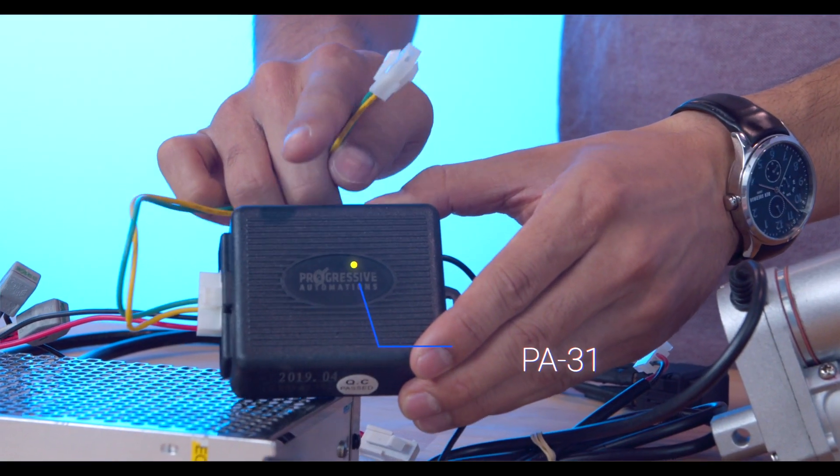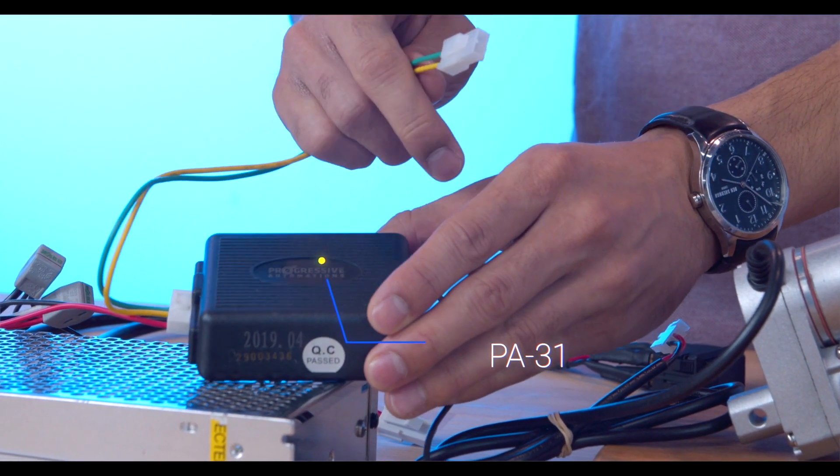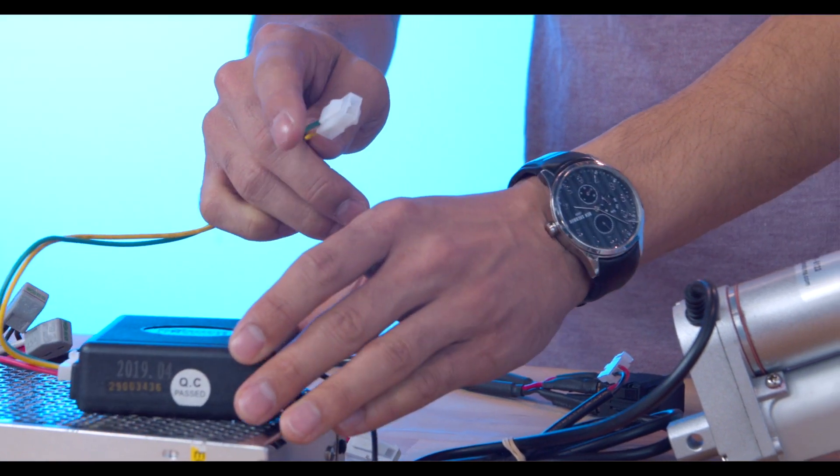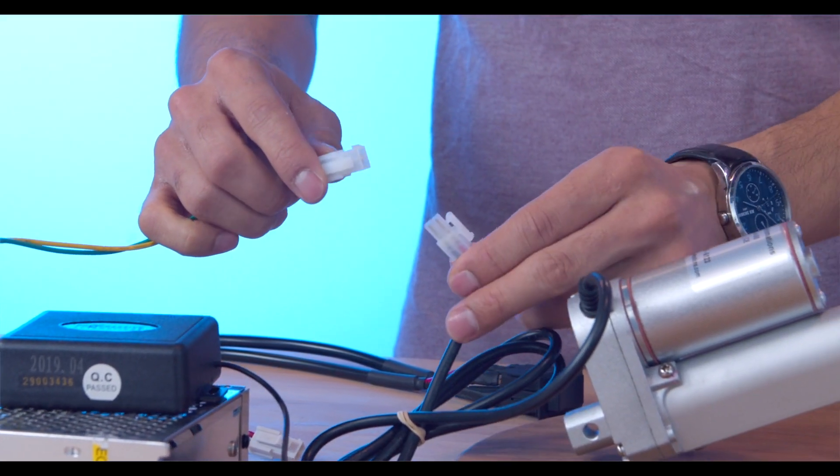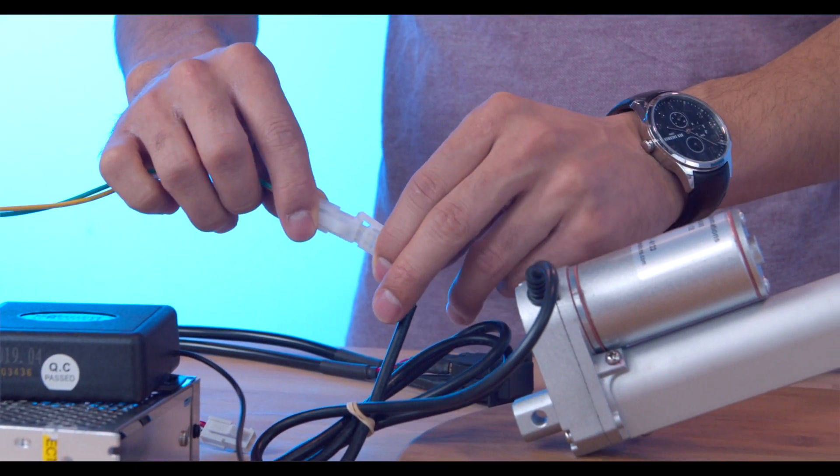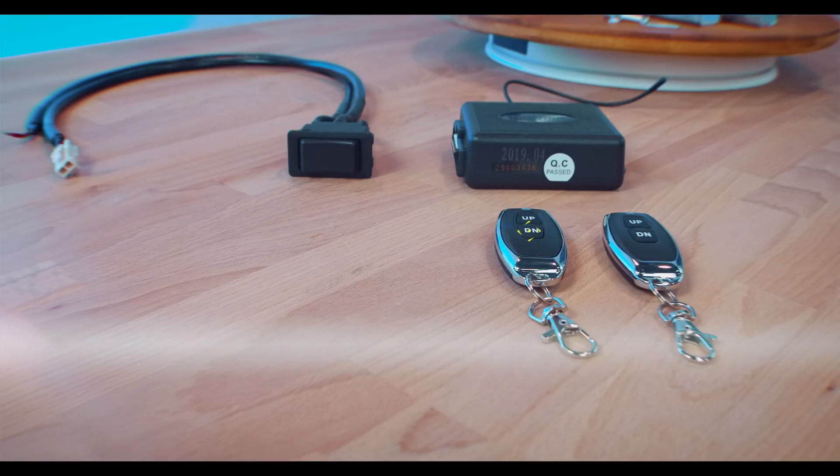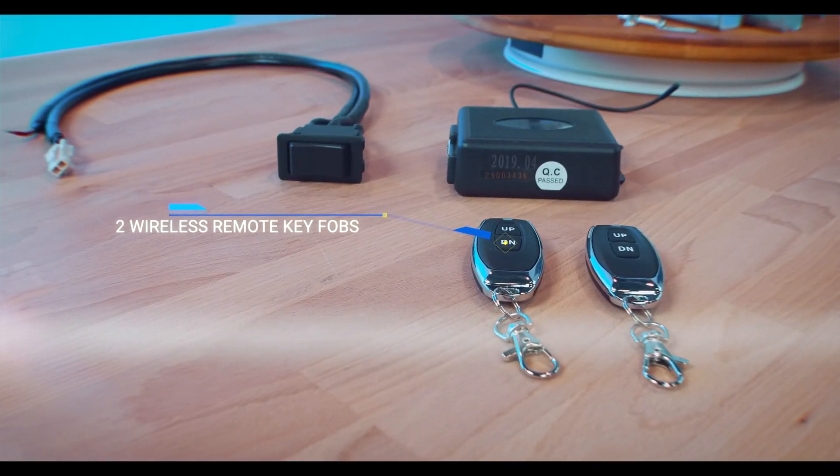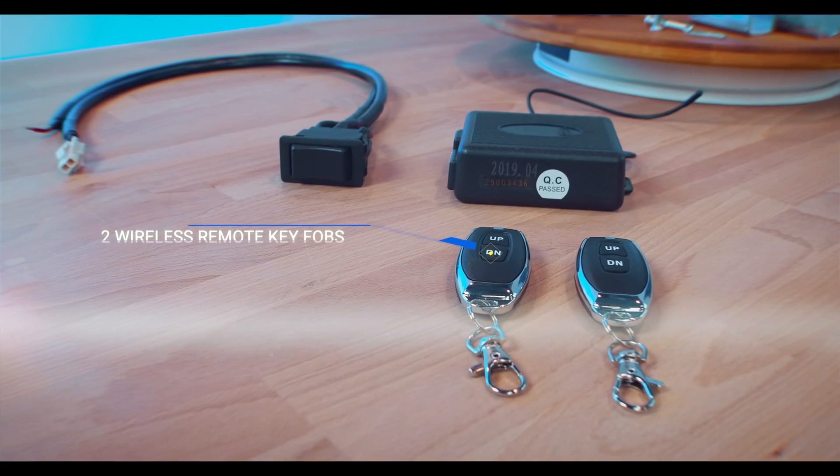Alternatively, we have our wireless control box. This comes with the same compatible cable as the RC12, and again, connecting them is simple. This control box comes with two wireless remote key fobs, which is perfect for wirelessly controlling your actuator.